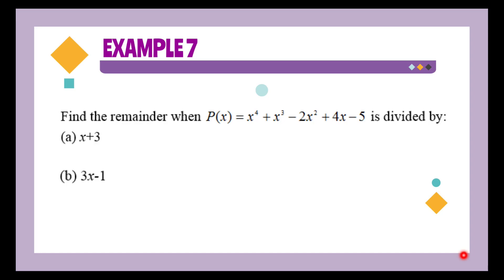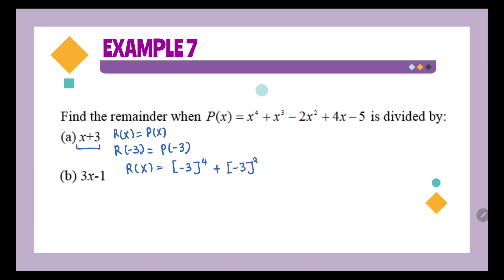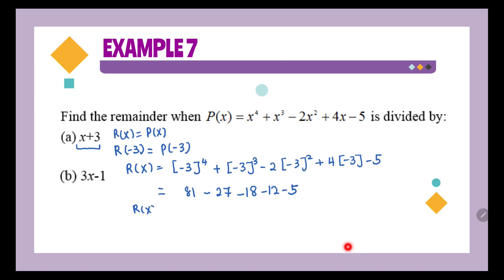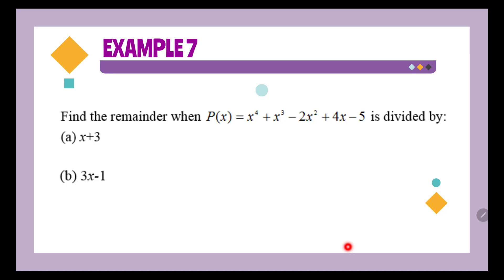Let's look at example 7a: find the remainder when p(x) = x⁴ + x³ + ... is divided by x + 3. We know the remainder r(x) equals p(x) evaluated at the substituted value. Since we're dividing by x + 3, we substitute x = −3. So we compute (−3)⁴ + (−3)³ − 2(−3)² + 4(−3) − 5, which gives 81 − 27 − 18 − 12 − 5. Therefore the remainder is 19.